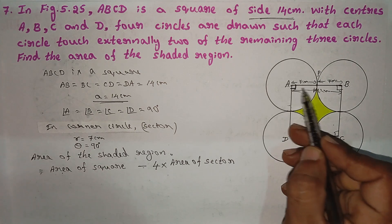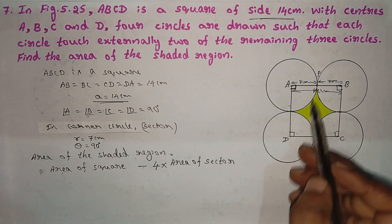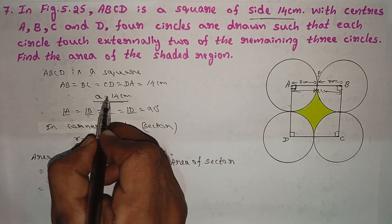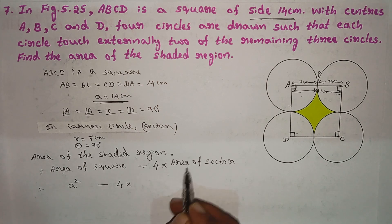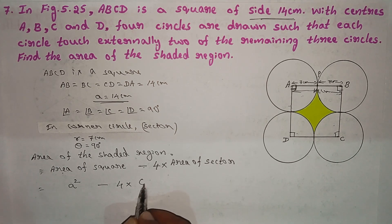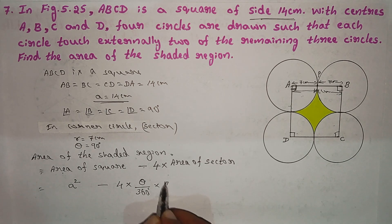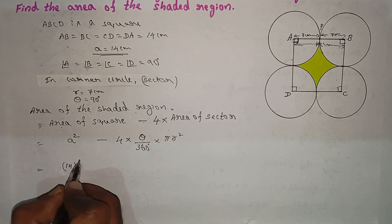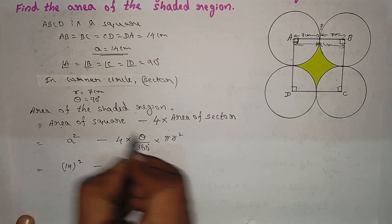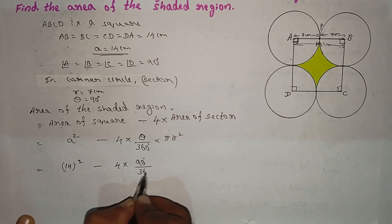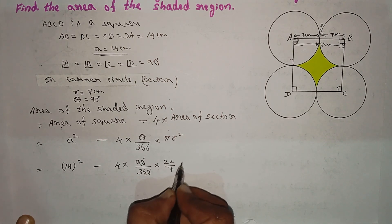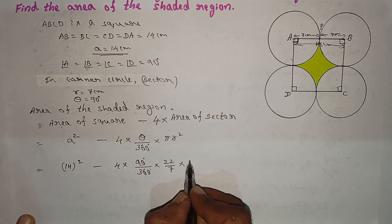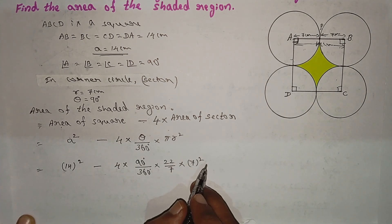Area of square minus 4 into area of sector. The area of sector formula is equal to theta divided by 360 degrees into pi r squared. The value of pi is 22/7 and the radius r is 7.